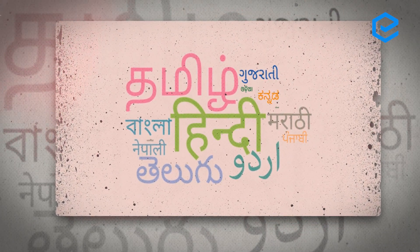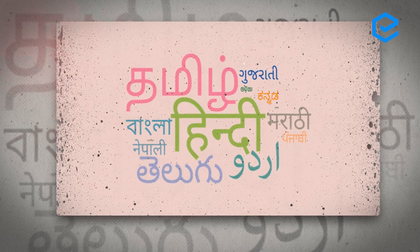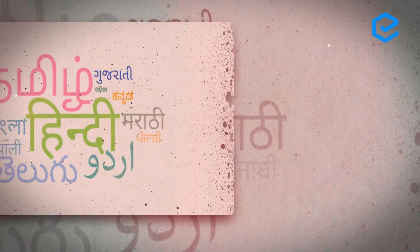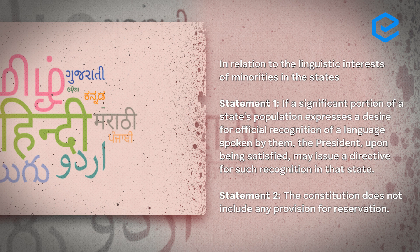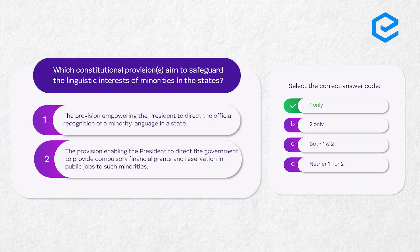Our reservation of jobs is based on backwardness — specifically social and educational backwardness. Regarding linguistic interest of minorities: if a significant portion of a state population expresses a desire for official recognition of a language spoken by them, the president, upon being satisfied, may issue a directive for such recognition in that state. So statement one is correct — the president can direct official recognition of a minority language. But the constitution provides no provision giving linguistic minorities reservation in jobs or compulsory financial grants.